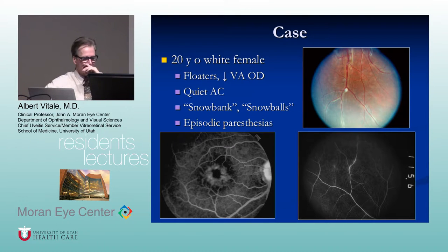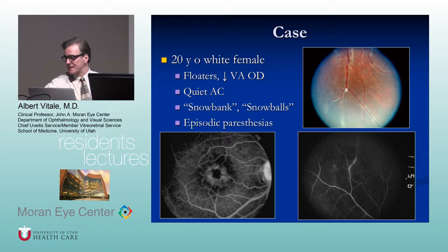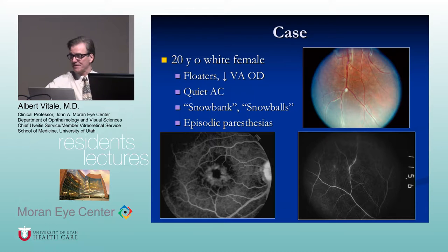Intermediate uveitis is not the same as pars planitis. Intermediate uveitis designates an anatomic location for inflammation — the vitreous, peripheral retina, and peripheral vessels. When it is not associated with systemic disease, we call it pars planitis. If the patient has sarcoidosis, you would call it intermediate uveitis associated with sarcoidosis.